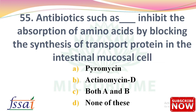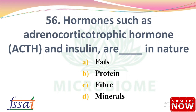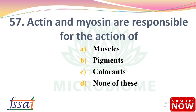Next: Antibiotics such as dash inhibit the absorption of amino acids by blocking the synthesis of transport protein in the intestinal mucosal cell — options: puromycin, actinomycin D, both A and B, none of these. The right answer is option C, both A and B: puromycin and actinomycin D. Next: Hormones such as adrenocorticotrophic hormone (ACTH) and insulin are dash in nature — options: fats, protein, fiber, minerals. The right answer is option B, protein.